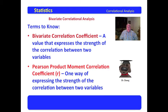In this lecture, we'll examine the Pearson product moment correlation coefficient, which is represented by the lowercase r, which is simply one way of expressing the strength of the correlation between two variables.